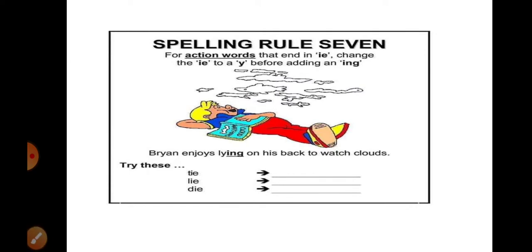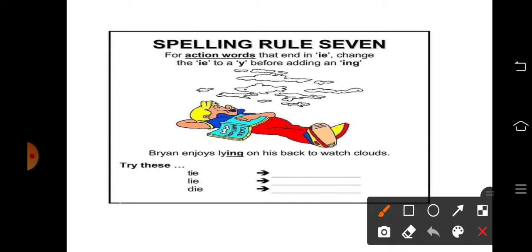आज हम Rule 6 के साथ Rule 7 भी पढ़ लेते हैं। छोटा सा rule है, इसमें ज्यादा words नहीं मिलेंगे। तो यह क्या बोलता है — for action words। Important याद रखिए: action words अलग हैं, noun अलग है। Noun के लिए formula apply नहीं होता, यह verb के लिए apply होता है — verb यानी action words।